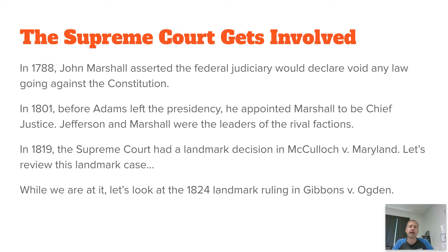In 1788, at the Virginia Ratification Convention for the Constitution, John Marshall mentioned — is there anything that the federal government can't do? He said the Supreme Court, the federal judicial branch, would declare any law that went against the Constitution unconstitutional. He said, as a federalist, anti-federalists shouldn't worry — if the federal government tries to do something it's not supposed to, the judicial branch would put them back in line. Right before Adams lost the election, John Adams appointed John Marshall as the Chief Justice of the United States — one of the leaders of the federalist camp — now going against Thomas Jefferson.